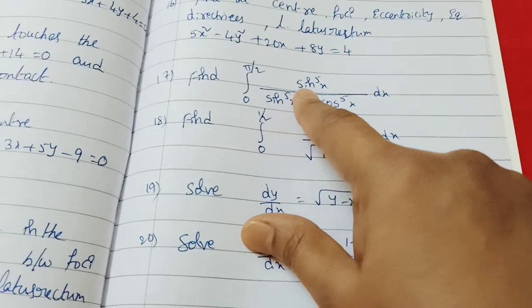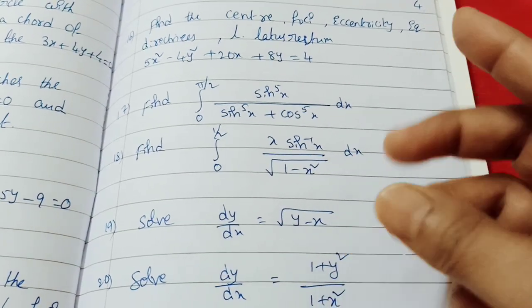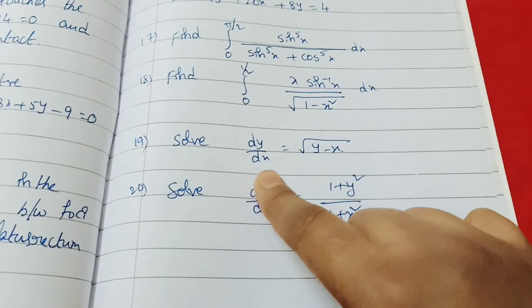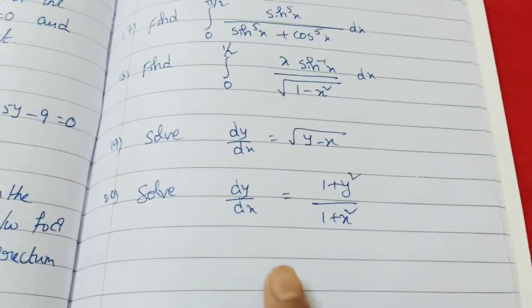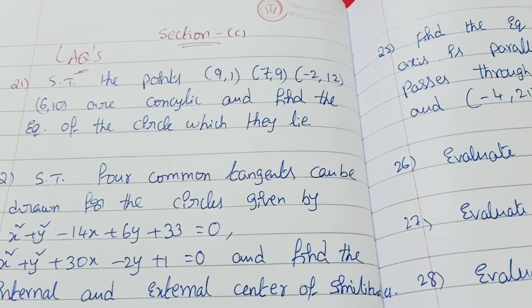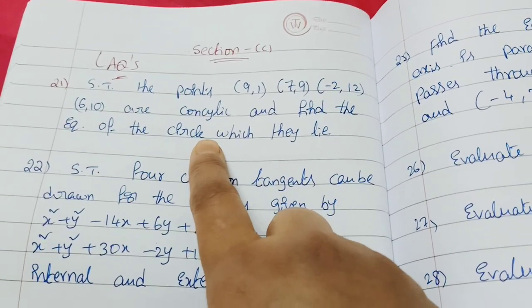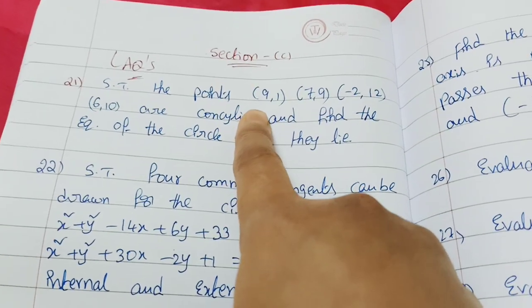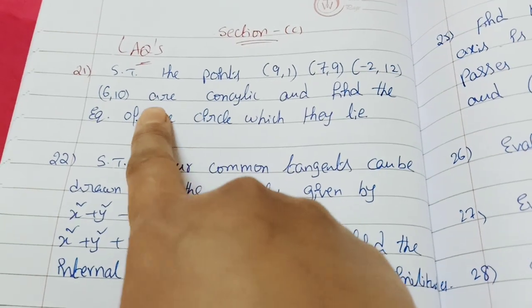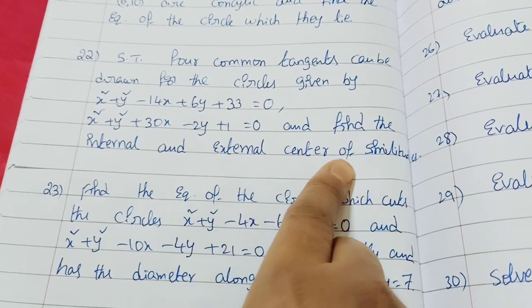Next: hyperbola. Then integration - different integration types. Note: integration 4-mark questions are not the same as 7-mark mode. Next, 4-mark questions 19 and 20 are very easy. Question C: concyclic points - if (9,1), (7,9), (-2,12), (6,10) are concyclic, find the equation of the circle. Use the general equation x² + y² + 2gx + 2fy + c = 0 and substitute each point.